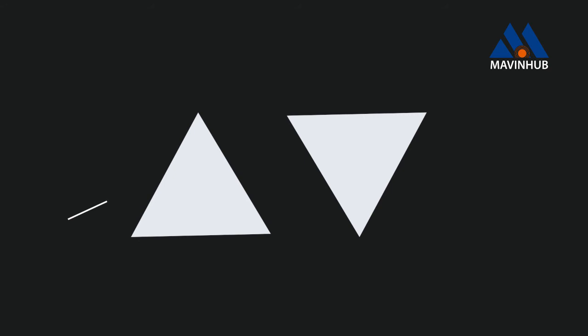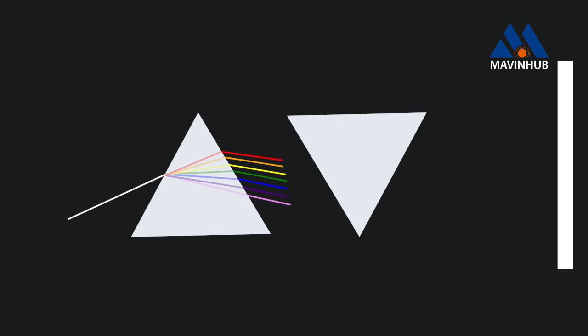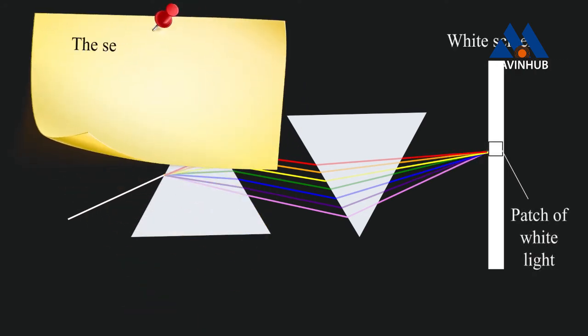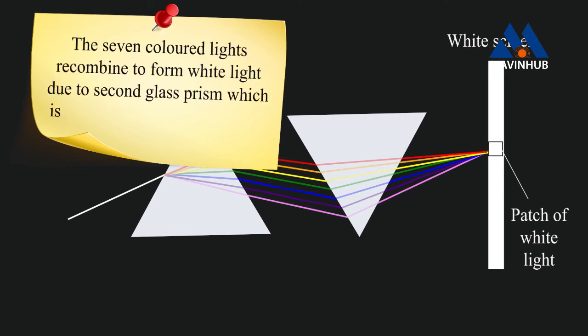When white light passes through the first prism, it disperses the light into seven colors. And when this beam of light enters the second prism which is placed in an inverted position, white light is obtained when it comes out of the second prism. The seven colored light will be combined to form white light due to the second glass prism which is placed in a reverse position.